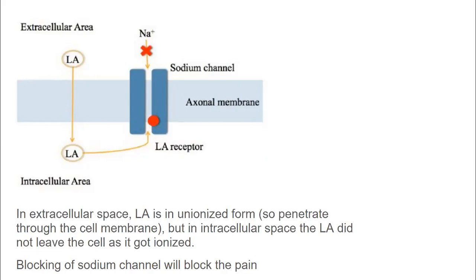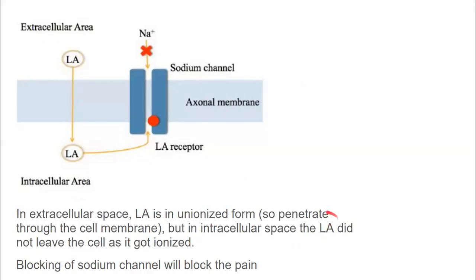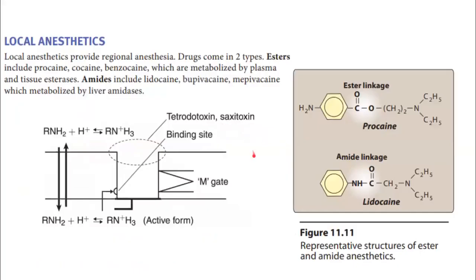To summarize: the local anesthetic starts unionized, enters the cell, becomes ionized, blocks the sodium ion channel from inside, and stops sodium ions from entering. As a result, action potential is not produced. When action potential is not produced, signals are not sent to the brain, and pain is not felt at all.